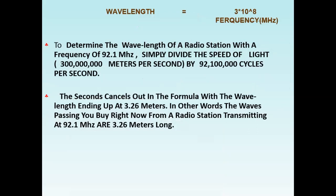Wavelength is equal to 3 times 10 to the power of 8 divided by frequency in megahertz. To determine the wavelength of a radio station with a frequency of 92.1 megahertz, simply divide the speed of light, 300 million meters per second, by 92.1 million cycles per second. The wavelength ends up at 3.26 meters. In other words, the waves passing you by from a radio station transmitting at 92.1 megahertz are 3.26 meters long.